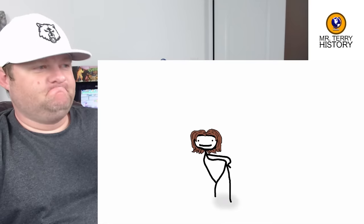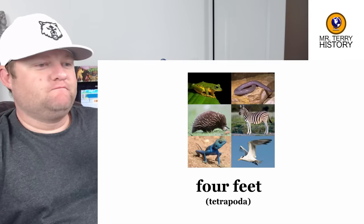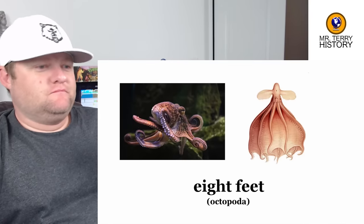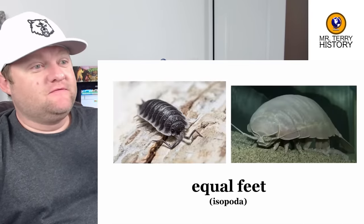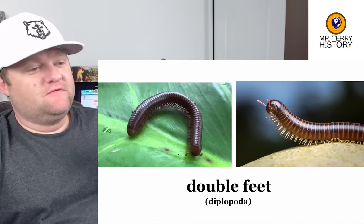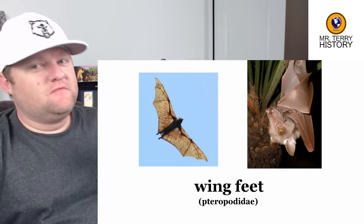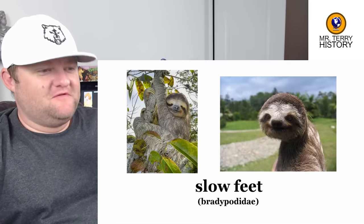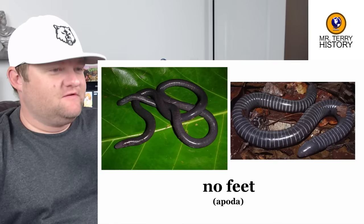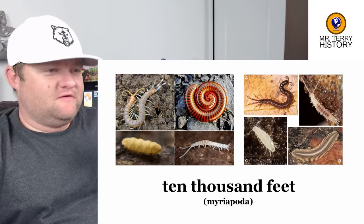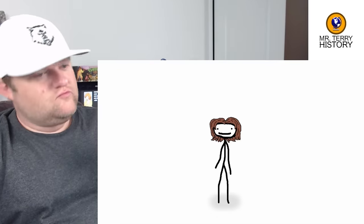Matter of fact, if it's got feet, chances are that's part of its name somewhere. You got four feet, six feet, eight feet, ten feet, two feet, equal feet, both feet, double feet, stomach feet, lip feet, sucker feet, wing feet, big feet, slow feet, or feet, joint feet, no feet, ten thousand feet, cow's feet, spade feet, cat feet, small feet.